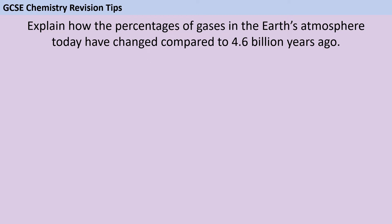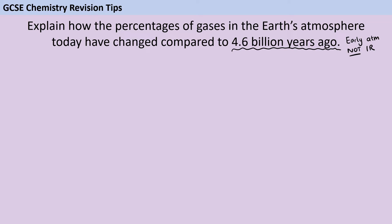Whenever a question comes up on the exam which asks you about changes to the Earth's atmosphere, the number one mistake that lots of students make is that they don't identify the time period they're being asked about. In this question we're asked about changes between the Earth's early atmosphere and the atmosphere today, so you shouldn't be talking about changes that are the result of the industrial revolution in the last 200 years or so. We don't want to be hearing about combustion engines and cars and factories — that's a different question.